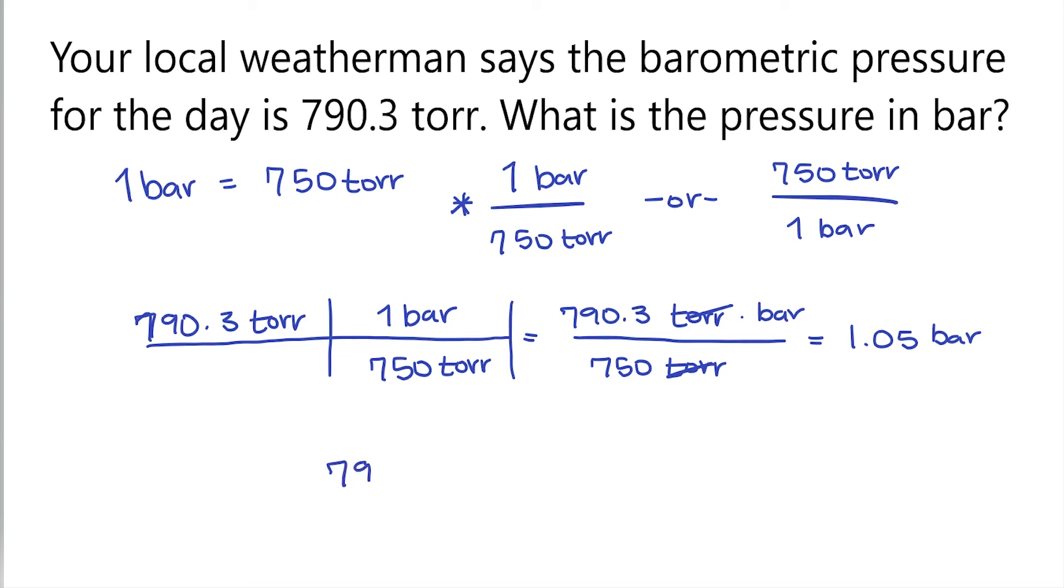So we know that 790.3 torr is going to be equal to 1.05 bar. And that is how we convert from torr to bar.